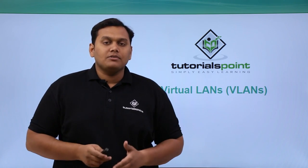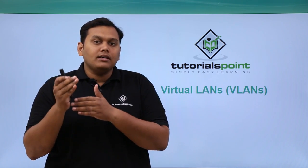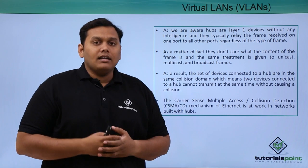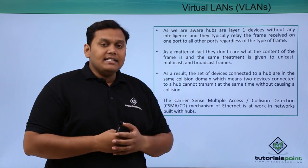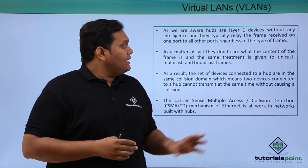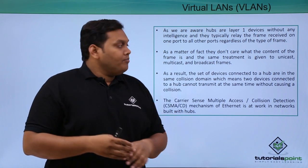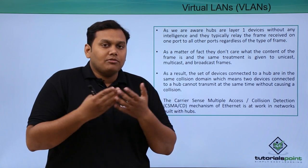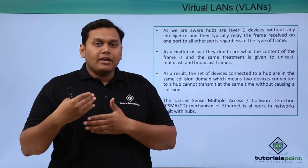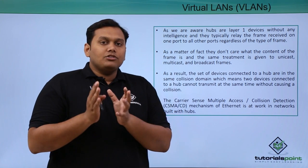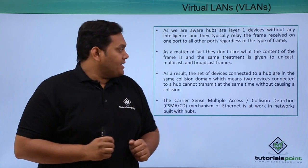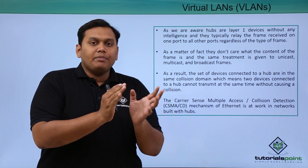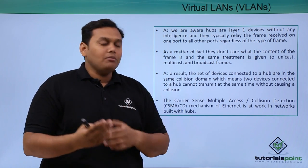Before going to VLANs and its concepts, we will discuss how networks existed before VLANs were introduced. Hubs are Layer 1 devices without any intelligence — they are simply relays that propagate the frame to all interfaces or ports regardless of the type of frame. They do not care what is in the frame; they forward it to all ports based only on the header and trailer.